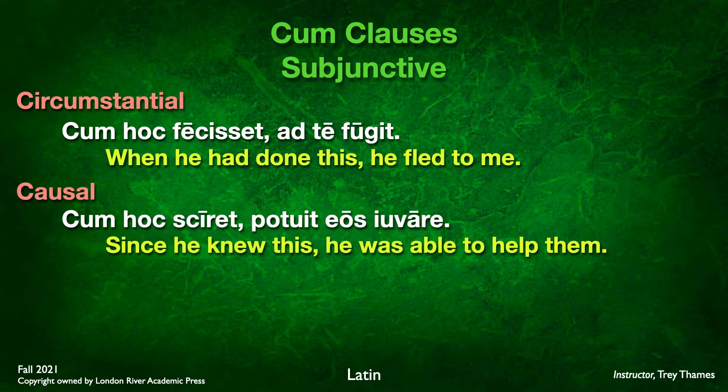For the causal cum clause: cum hoc sciret, potuit eos iuvare. Sciret is subjunctive imperfect — subjunctive in a cum clause, so we translate as indicative. Cum here we translate as 'since.' Since he knew this, he was able to help them. This is a cause-and-effect relationship between the main verb and the secondary verb, so we use 'since.'